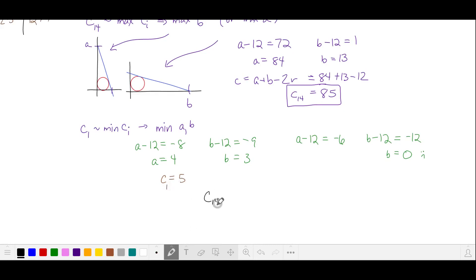The problem asks for C14 over C1. That's 85 over 5. Our answer is 17, option E. If you want me to solve any more AMC or AIME problems, please leave them in the comments. Thank you.